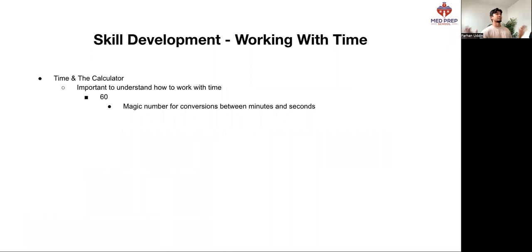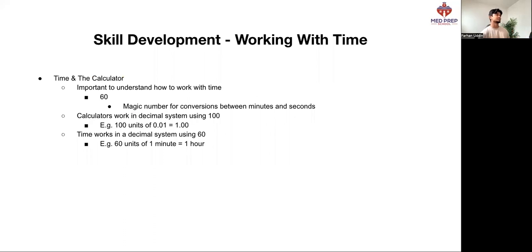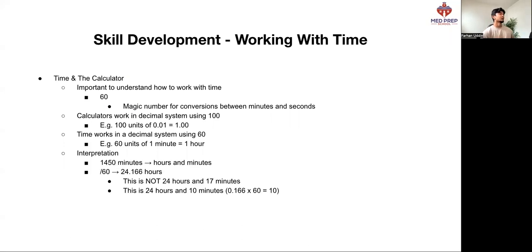Now moving on to working with time, which is a completely separate topic. It's really important to know how to work with time and the calculator. So your magic number here is 60. This is how you convert between minutes and seconds. Calculators work in the decimal system using number 100, so 100 units of 0.01 will give you one. Time works using 60 - 60 units of one minute equals one hour. We all know that, but when it comes to working with that in the calculator it can get a tad confusing.